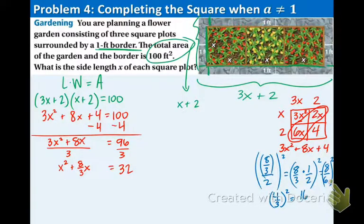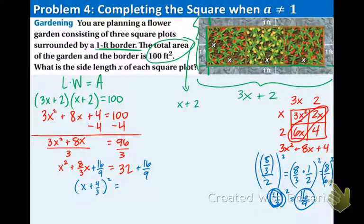This is the number we're going to be adding to both sides. So plus 16 over 9, plus 16 over 9. Now the good news is we can rewrite this as a perfect square trinomial. And that number is 4 thirds, which is this number right here. So you always just rewrite that number inside the parentheses.